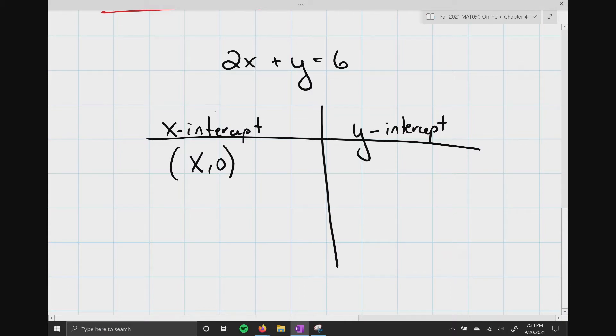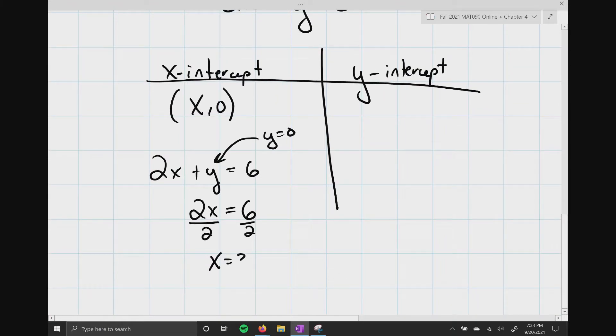So, my equation above, 2x plus y equals 6, really just turns into 2x equals 6. And that's because y equals 0. So, I could just basically just cross it out and just 2x equals 6. Now, if I just take 2x equals 6 and solve, I get x equals 3, which means my x-intercept is 3 comma 0.